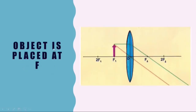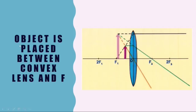Number five: when the object is placed at f. The rays after passing through the lens become parallel, so we get an image at infinity. This image will be upright, virtual, and magnified, and it will be on the same side of the lens where the object is placed. This principle is used to produce a parallel beam of light — for example, a spotlight.